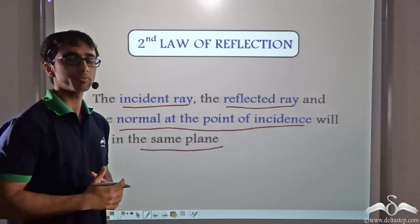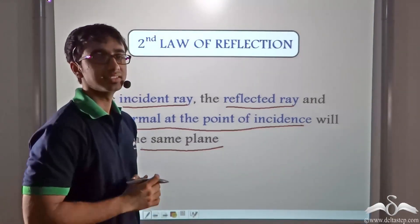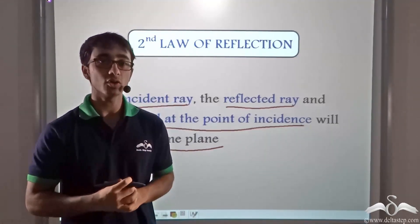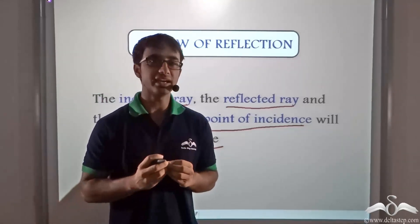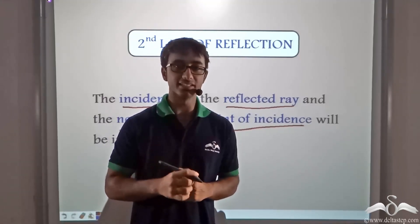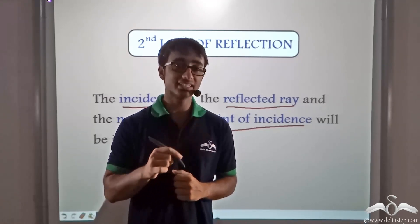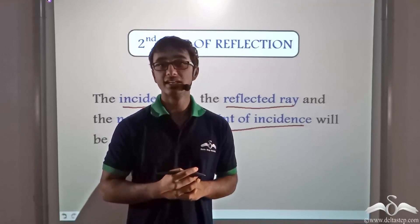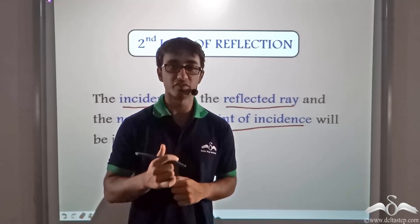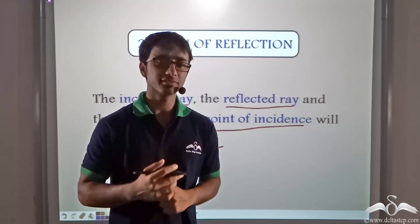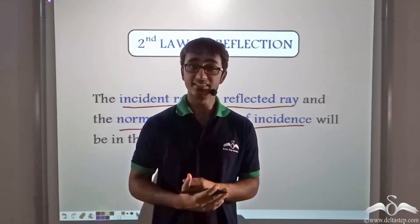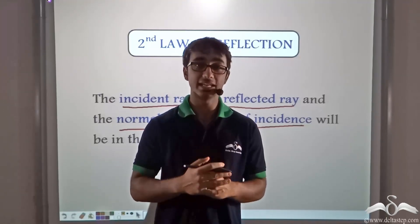Let us take a quick recap of what we learnt. We learnt that light after getting reflected from an object enters our eyes and that is how we are able to see. This reflection of light is guided by certain laws. The first law states that the angle of incidence — the angle between the incident ray and the normal at the point of incidence — is always equal to the angle of reflection. The second law states that the normal at the point of incidence, the incident ray and the reflected ray all lie in the same plane.